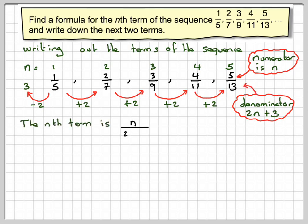Therefore, the nth term of this sequence is going to be n, the numerator, divided by the denominator, which is 2n plus 3.